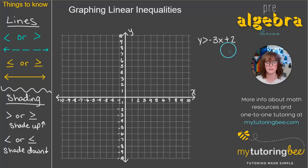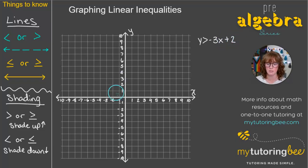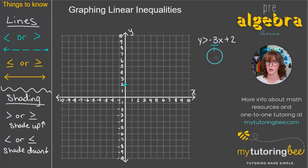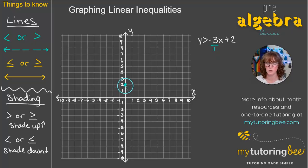We're going to start the same way as with equations — look at the y-intercept. In this case it's positive 2, so we locate positive 2 on our y-axis and put a point there. Next, we move to the slope. Our slope is a negative integer; we want it in fraction form to figure out the rise over run. We have negative 3 over positive 1, so we go down 3 and over to the right 1.